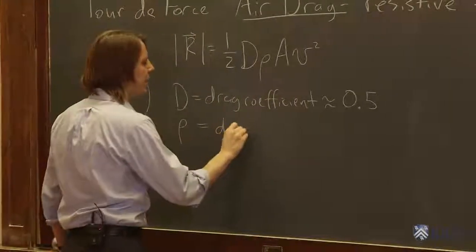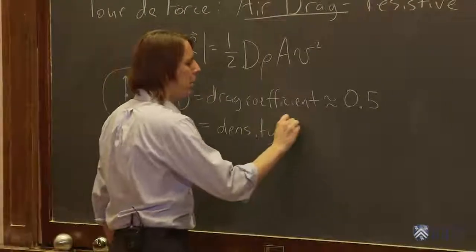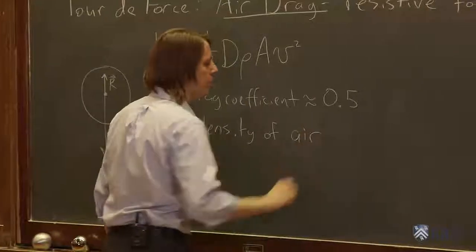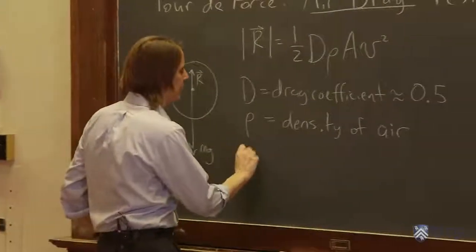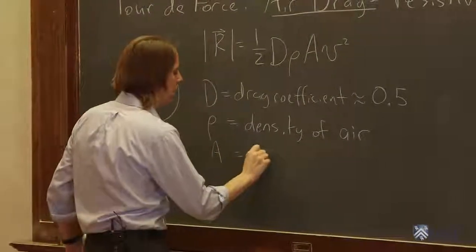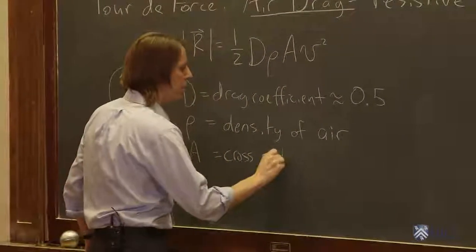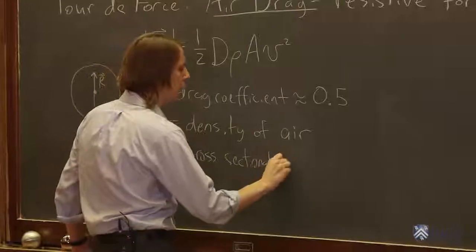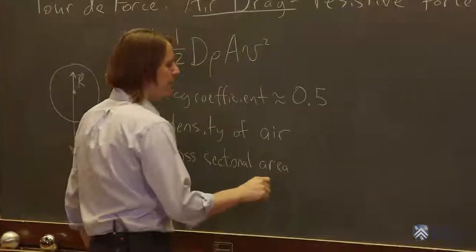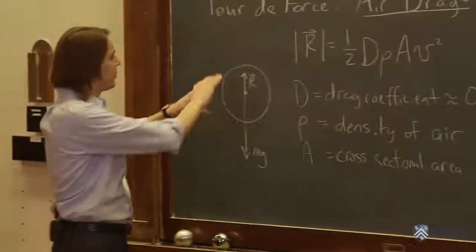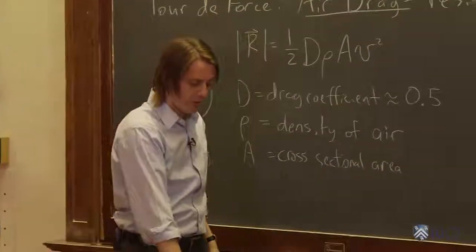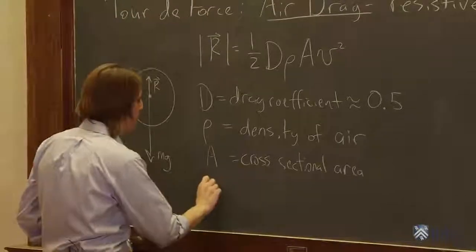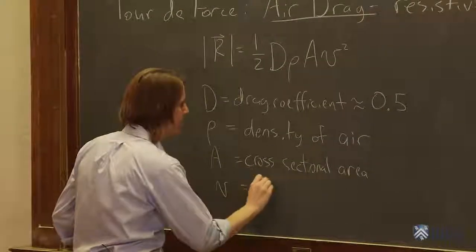Rho is the density of air, which is rather low. A is the cross-sectional area of the object dropping, not the surface area, but the cross-sectional area, whatever the air sees as the ball or the object falls.